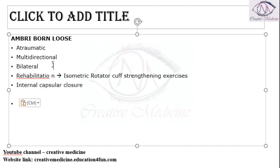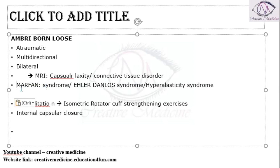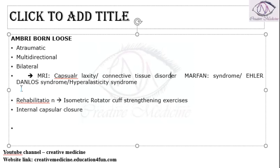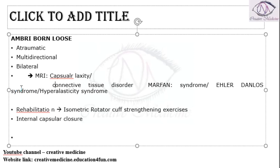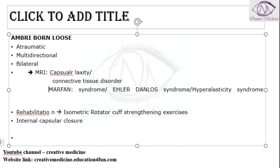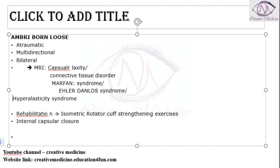In bilateral cases especially, if you do an MRI, in AMBRI on MRI you can see capsular laxity in the patient. This can be due to connective tissue disorders such as Marfan syndrome — which involves a fibrillin defect — Ehlers-Danlos syndrome, or hyperelastic syndrome. In all these conditions, the lesions are bilateral in nature.